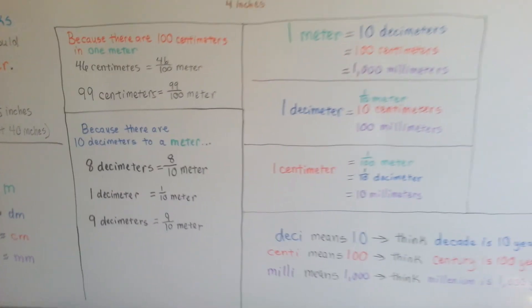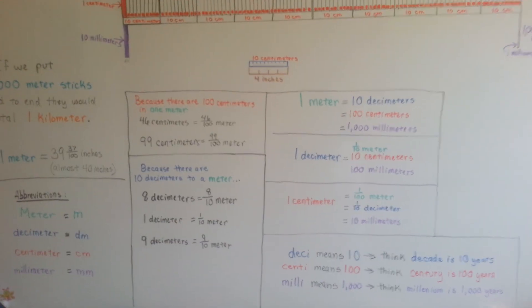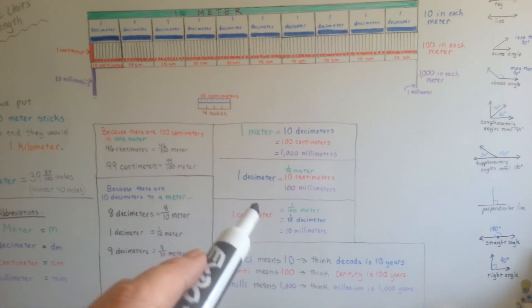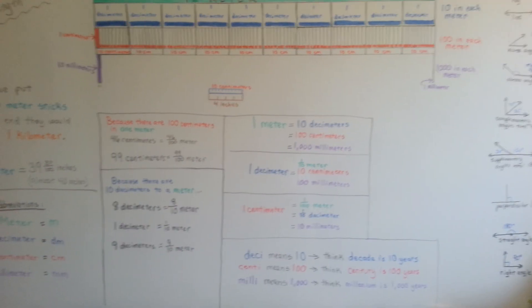They could either be a fraction, or they could be in groups of ten, or hundred, or thousand.